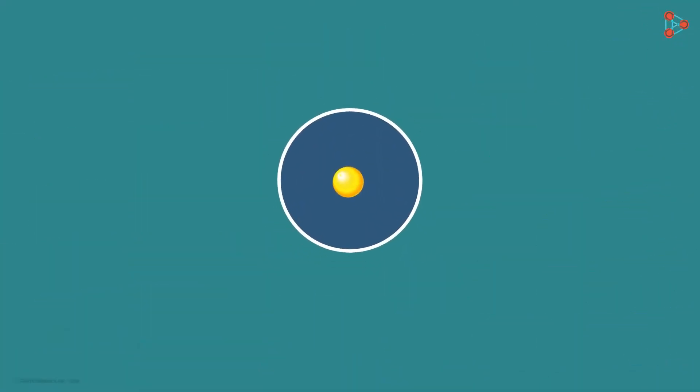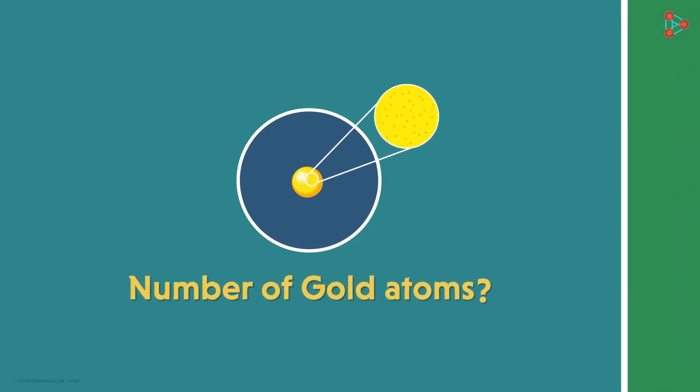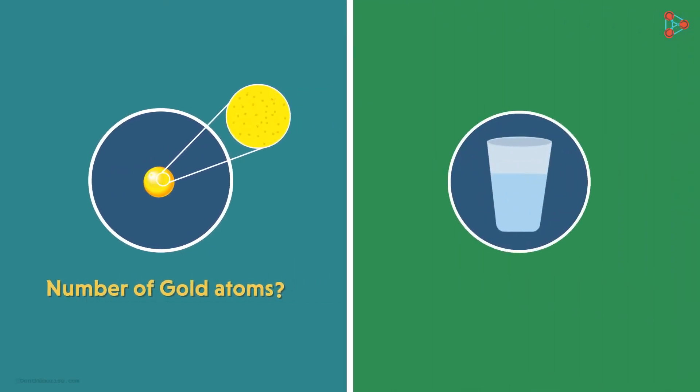Looking at this pure gold, can you tell me how many gold atoms are present in this? Or looking at this glass of water, can you tell me how many water molecules are present in it? You will probably say that it is practically impossible to calculate the number of atoms or molecules in these examples.